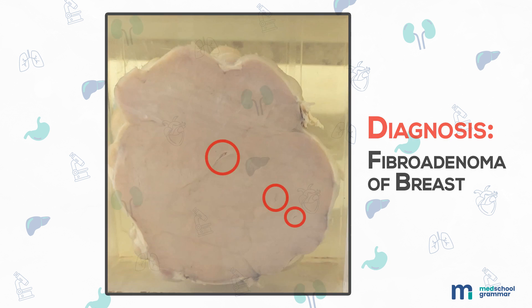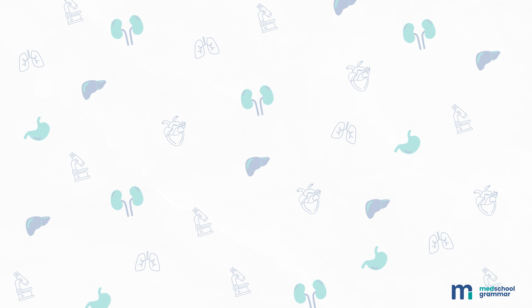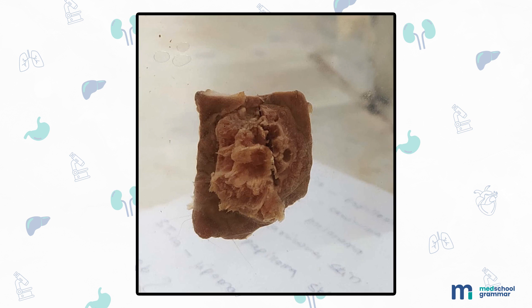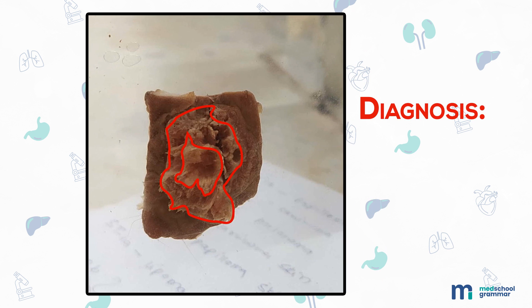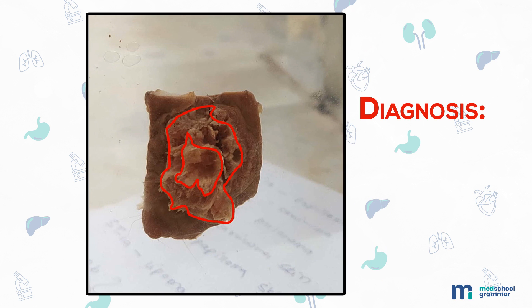Now let us move on to the specimens of skin. First, we have a specimen of a skin-covered tumor measuring 4 by 4 centimeters, having a papillary appearance formed by broad papillae. Diagnosis: this is a specimen of papilloma of skin.